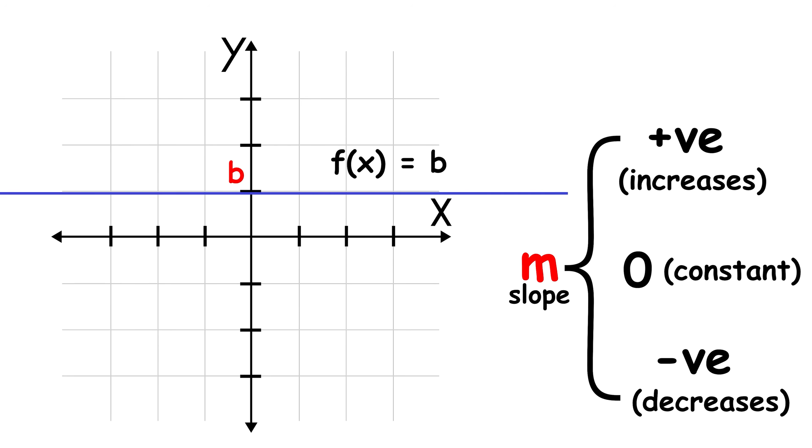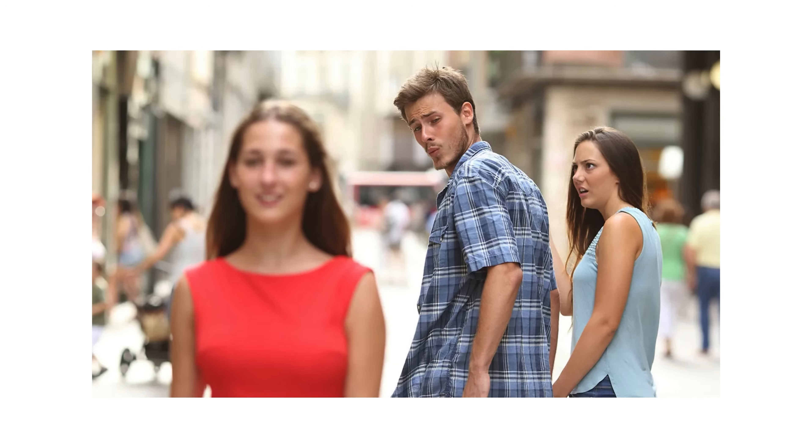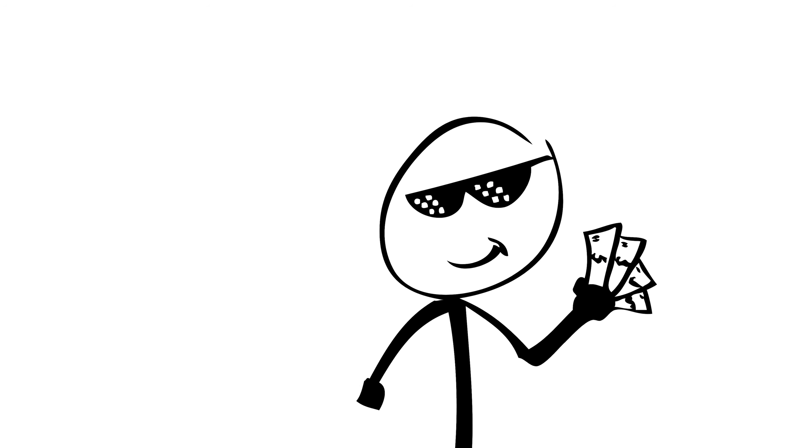Its graph is always a straight line. They are ideal for modeling relationships with constant change, such as proportional income or uniform speed.